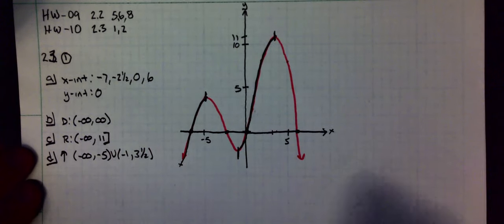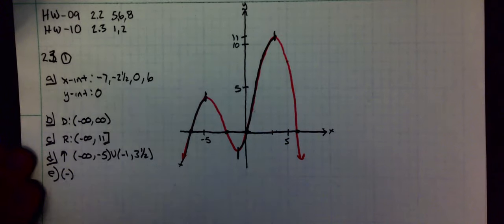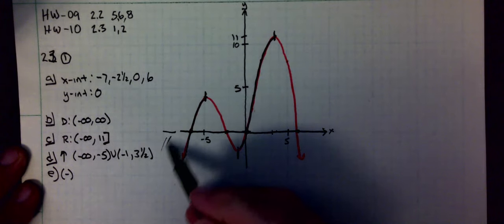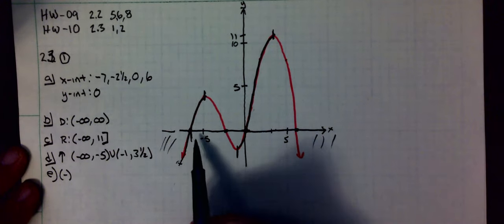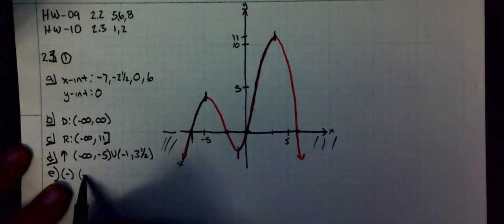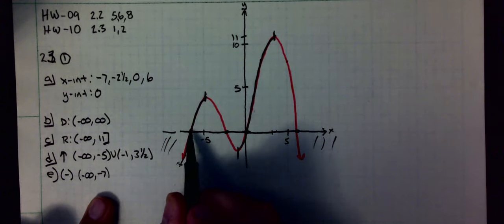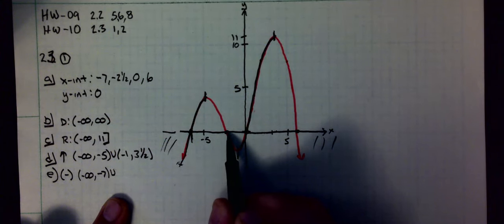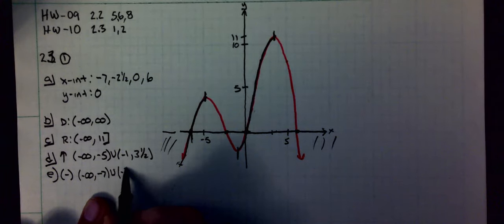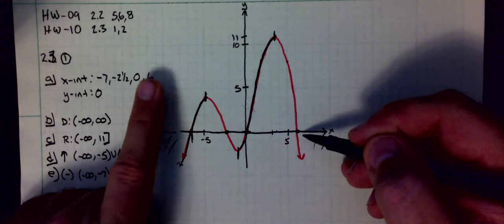Next thing is when is it negative? Negative is when is it below the x-axis. From negative infinity to negative 7, round bracket because at negative 7 it is actually 0. It is negative in this region here from negative 2 and a half to 0, and it is negative from 6 to infinity.